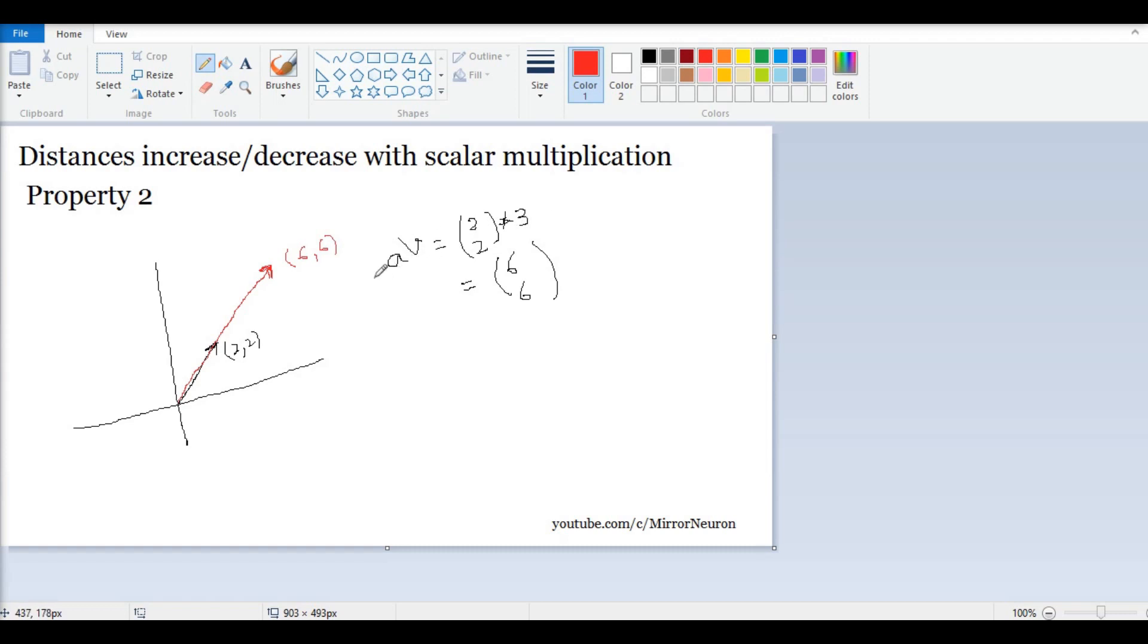Now I could have multiplied with minus a, and this could have been minus three. Then it would have become minus six, minus six, and instead of pointing in that direction, it would have pointed in this direction. The direction would change, that is fine, but the length will remain positive.